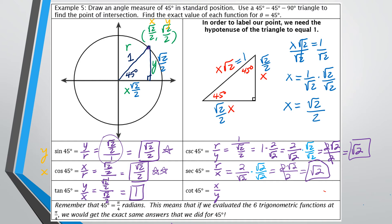For cotangent: tangent was 1, which is 1/1, and flipping gives 1/1 = 1. So tangent and cotangent both equal 1. One important note: we worked in degrees, so we used 45°. But 45 degrees and π/4 radians are equivalent. If asked for cosine of 45° or cosine of π/4, the answers are the same — you need to have memorized that these are the same angle.